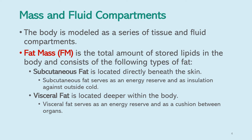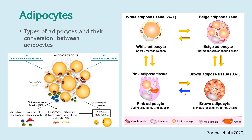Visceral fat serves as an energy reserve and as a cushion between organs. Fat cells are called adipocytes. There are various types of adipocytes and there is conversion between them. We have white adipose tissue, beige adipose tissue, brown adipose tissue, and pink adipose tissue, with corresponding white, beige, brown, and pink adipocytes.